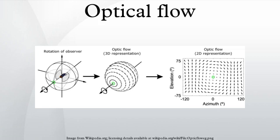Optical flow or optic flow is the pattern of apparent motion of objects, surfaces, and edges in a visual scene caused by the relative motion between an observer and the scene.